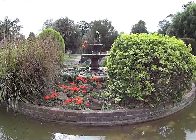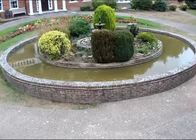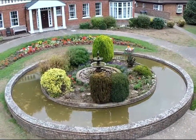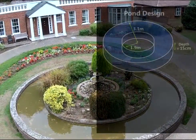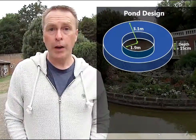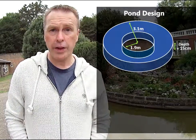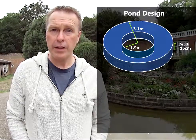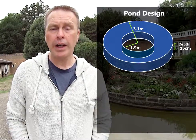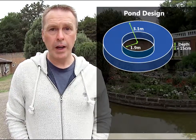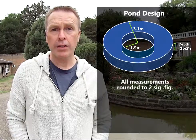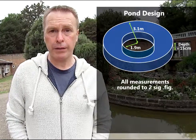The water feature has a central fountain surrounded by a circular pond. Here in this diagram you can see the design of the water feature. We're given the radius of the outside of the pond, the radius of the island in the centre of the pond, and also the depth of the water. But each of these measurements has already been rounded to two significant figures.